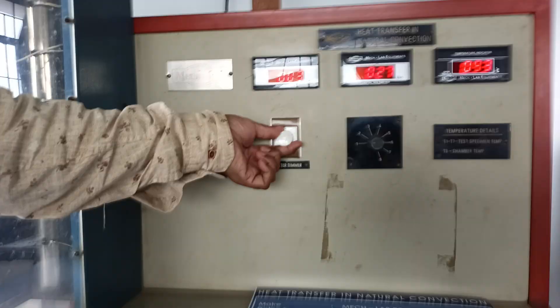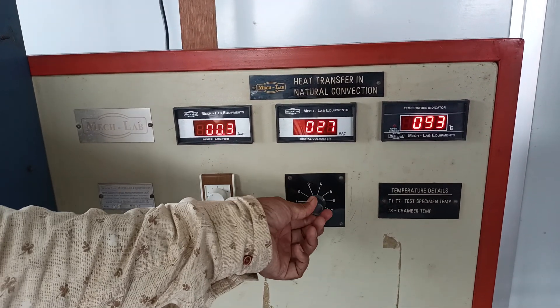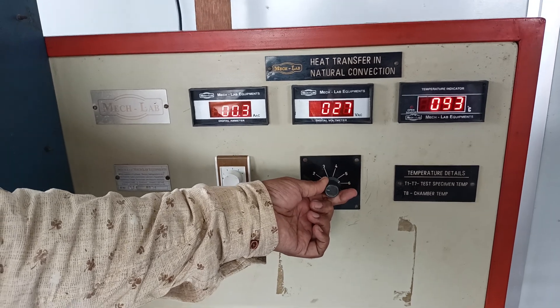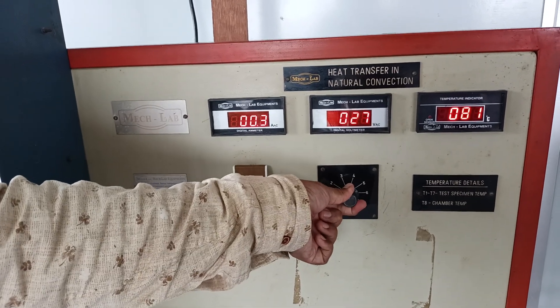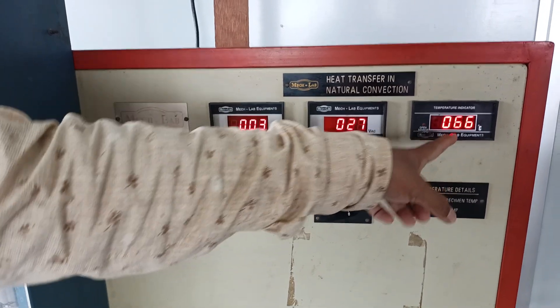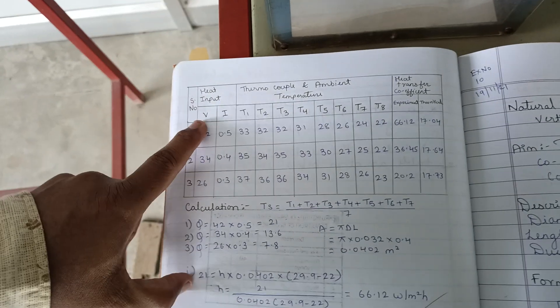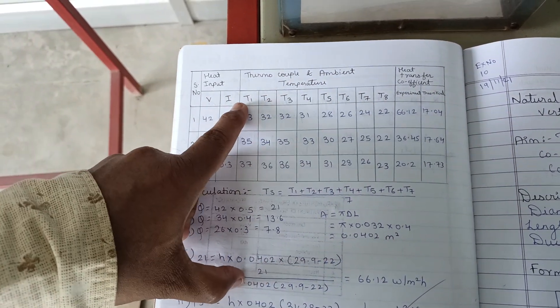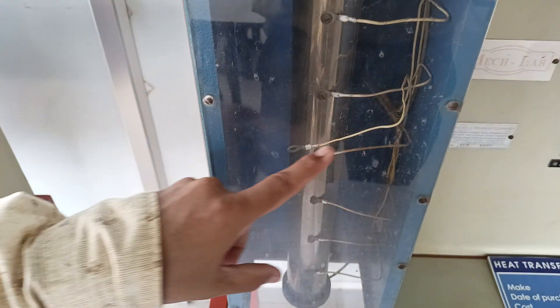We set the dimmer to 27 volts and the corresponding ammeter reads 0.3 amps. The temperature at thermocouple 1 on the cylinder you can see is 93 degrees. Reading 2 is for the second thermocouple, reading 3 for the third, and so on. For 7 thermocouples we have 7 sets of readings visible on the digital display. The tabulation includes heater input voltage, current, and thermocouple readings T1 to T7, plus the atmospheric temperature.